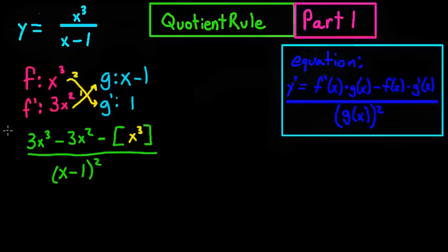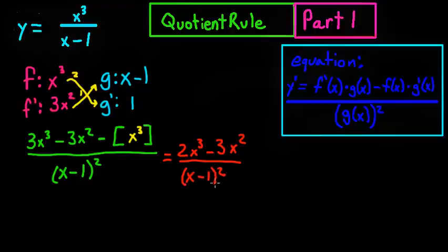Now to simplify this, it's going to give you your 3x cubed minus your x cubed is going to give you a 2x cubed. So you get 2x cubed minus 3x squared all over x minus 1 squared. And that is your answer.